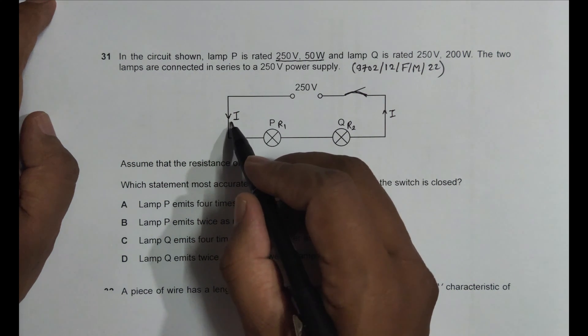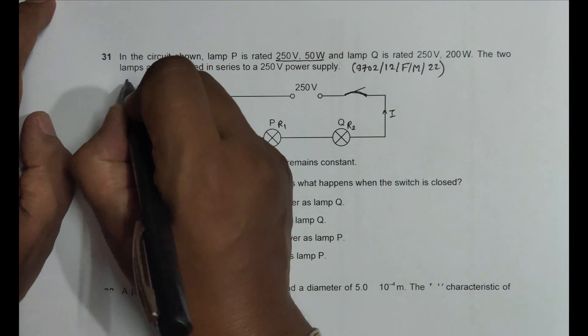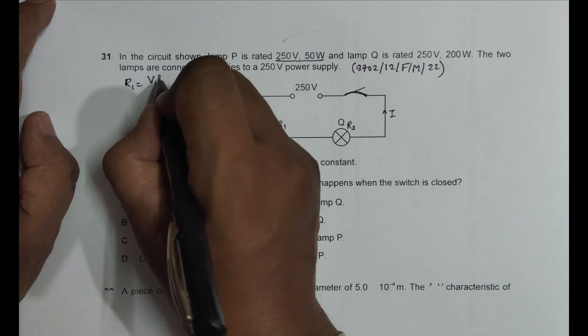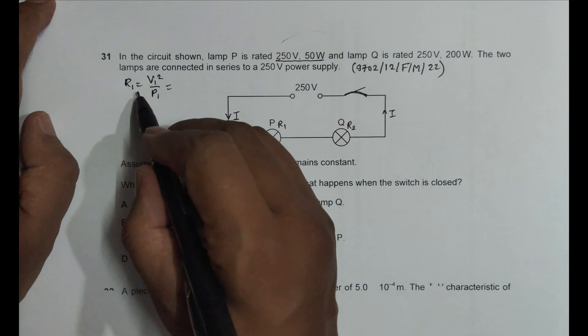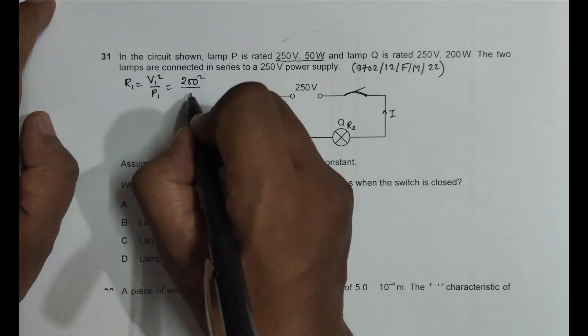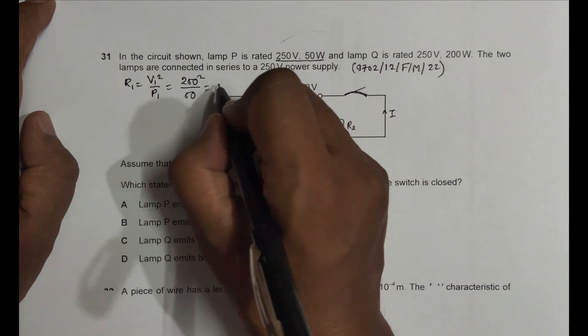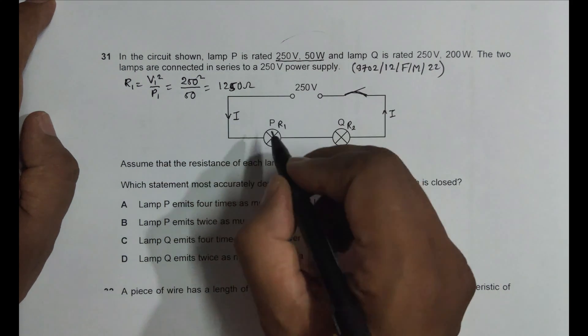First let's find R1. R1 is equal to, from this rating, it is V1 squared by P1. It comes from the relation power equal to V square by R. So this V1 squared is 250 squared and P1 is 50.